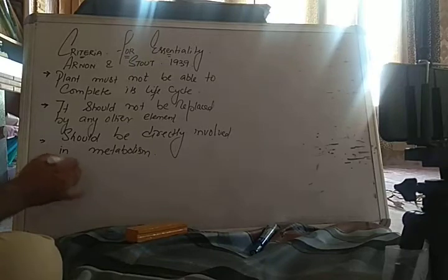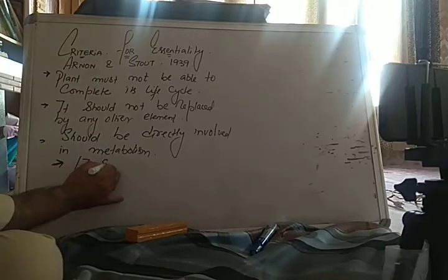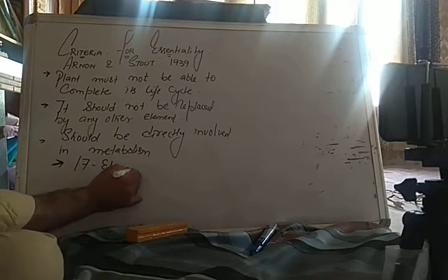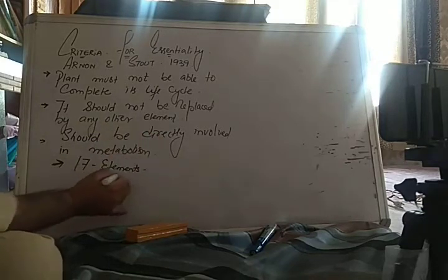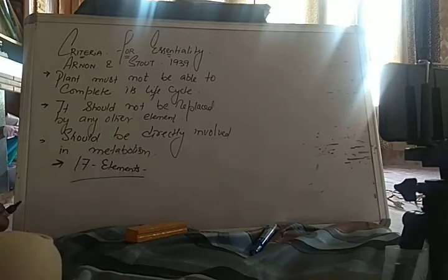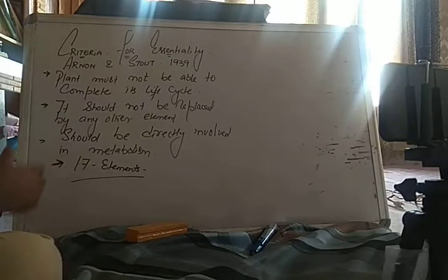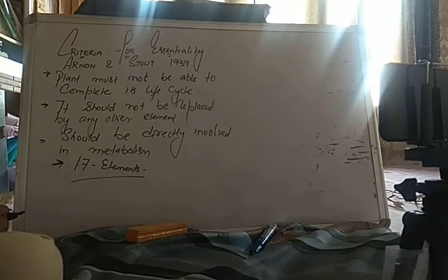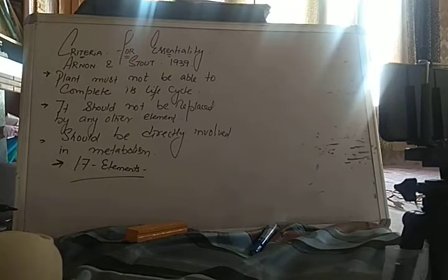Based on these three characteristics — the ABO criteria — only 17 elements have been found to fulfill all three criteria. These 17 elements are therefore called essential elements.